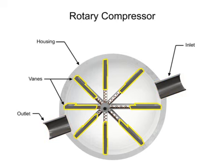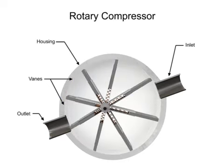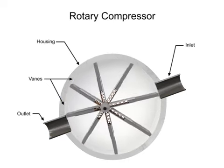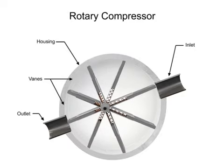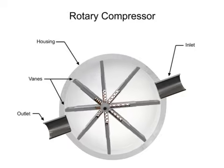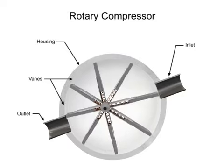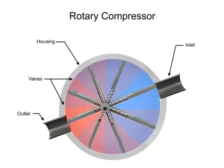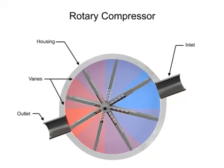The vanes are on an off-center drive shaft. As the shaft rotates, the vanes slide in and out to maintain contact with the cylindrical compressor wall. As they do, they create chambers within the cylinder of varying sizes.